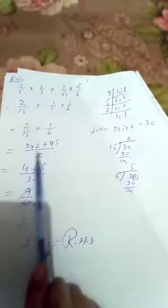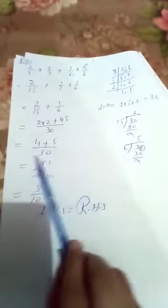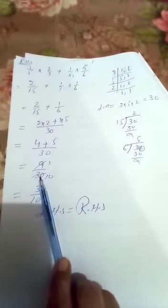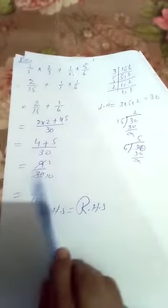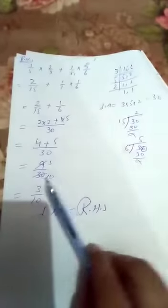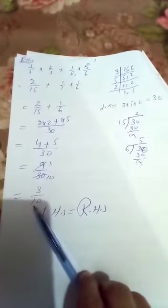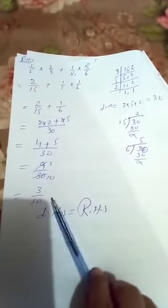And in rough work I have done here. Now students, 2 times 2 is 4, plus 5 times 1 is 5. Now after this we will add this rational number, 4 plus 5 we get 9 by 30. Now students, 9 by 30 is also present in same table. That's why we will simplify it. 3 times 3 is 9 and 10 times 3 is 30.